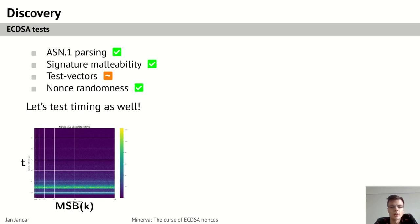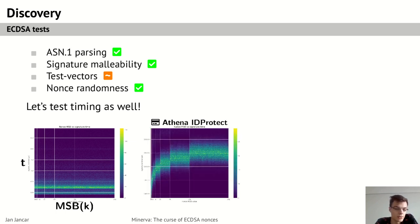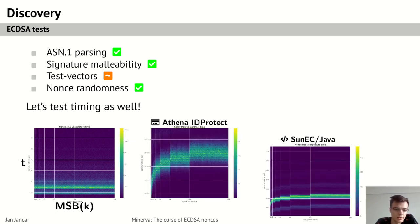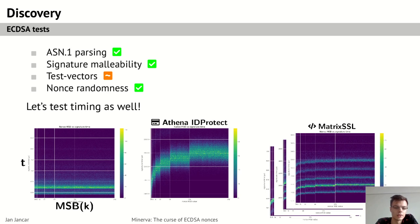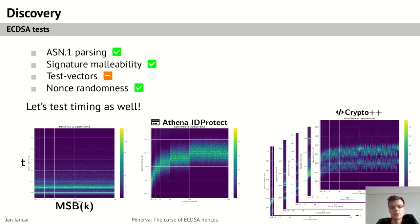This is a heatmap of the most significant byte of the random nonce used in signing, which is on the x-axis, and the duration of signing on the y-axis. This is how constant time implementation looks, and we expected to find something similar in all implementations. Instead, we found this on a smart card implementation, and then this in the default Java implementation, then this, and again, and then this, and even this, which I don't really know how to explain.